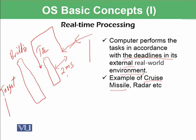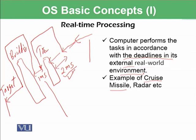If the cruise missile does not make this decision within 2 milliseconds, it will hit the tree and be destroyed, failing to reach its target. Similarly, if there is a huge building and it will take only 1 millisecond to hit it, the cruise missile must go upward and come back to its low-profile flight within that 1 millisecond, and then proceed to hit its target. These deadlines of 2 milliseconds and 1 millisecond must be met by the computer — this is real-time processing, where missing a deadline causes serious problems.